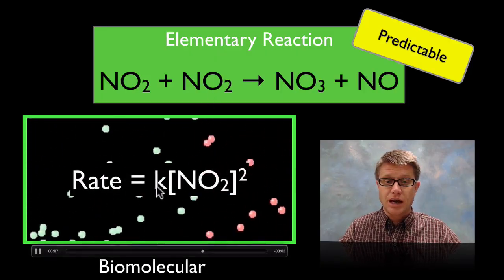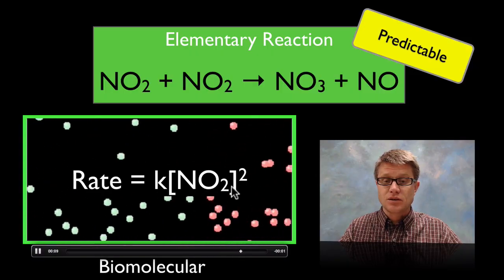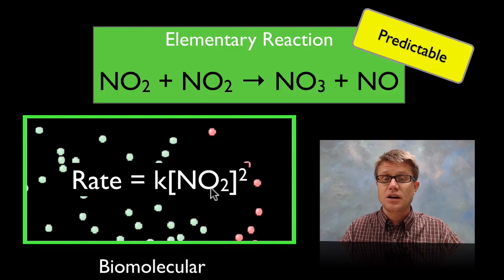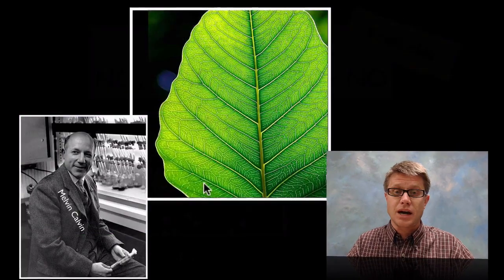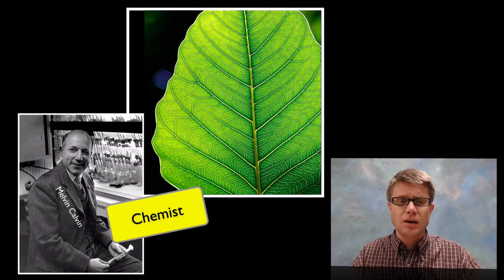And so we could make predictions about the rate law. The rate law is simply going to be K or the rate constant. And this is going to be a second order reaction. Because this is the concentration of each of these two reactants.